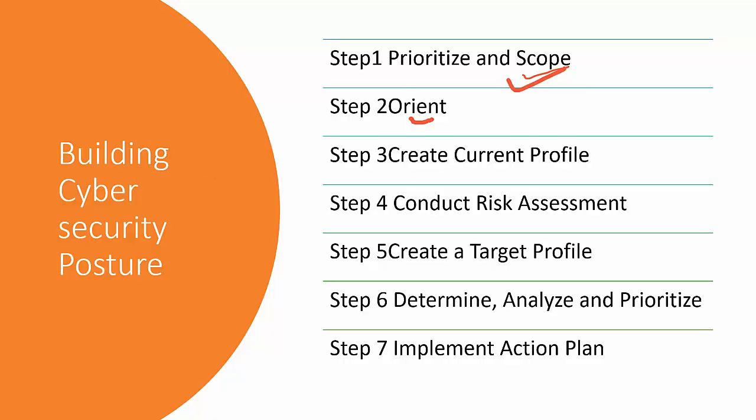The third step is Create a Current Profile — essentially, where are we now? When implementing anything, we need to know the current state and the desired state. In the current profile we document where we stand right now: what current threats and vulnerabilities exist, and what is our current cybersecurity maturity level. We also document the desired target state.